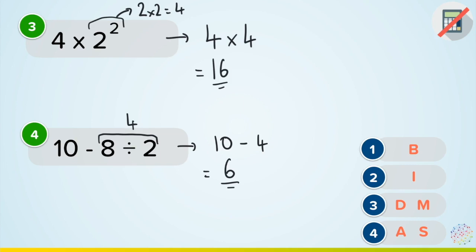So if you follow this and always think, do my brackets, then my indices, then divide or multiply working from left to right, then add or subtract working from left to right, I will get the correct answer. And that's as simple as BIDMAS is.